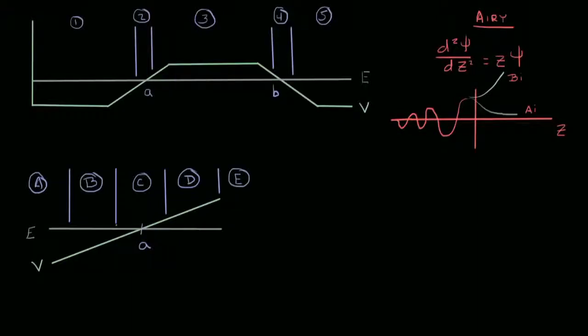Welcome back to our video module on the WKB approximation, where we continue our discussion of how to use the Airy function to compensate for the weaknesses in the WKB approximation, where E equals V or E is close to V. What I've done is I've redrawn our potential profile along with our energy on the top up here, as well as redrawn our five regions.